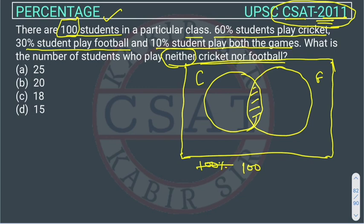How many students are playing cricket? 60%, so 60% of 100 is 60. How many students are playing football? 30%, so 30% of 100 is 30. And 10% play both, so this shaded overlapping area will be 10% of 100, which is 10.